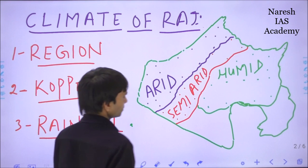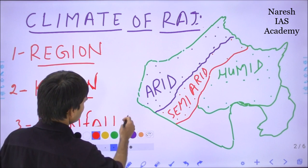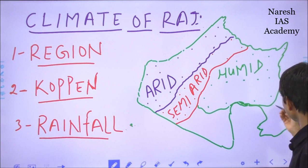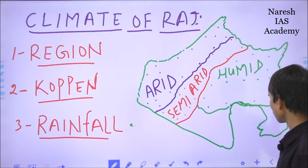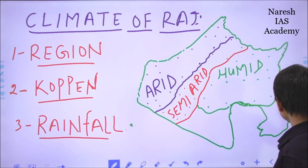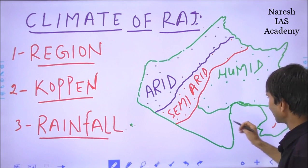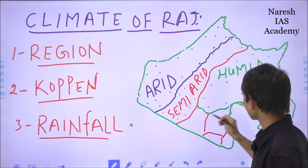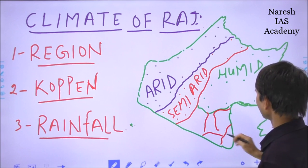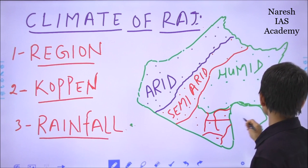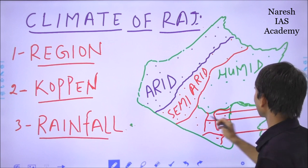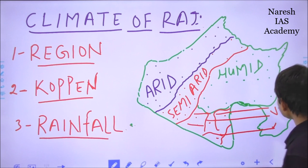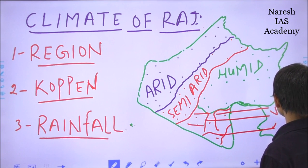The fourth and last region is the southeastern plateau region, also called the Hadothi Plateau, which includes Baran, Kota, and Jhalawar. This also includes southern Rajasthan — Banswara, Dungarpur, Udaipur, and Pratapgarh. This belt comes under the very humid climatic condition, also described as the most humid.